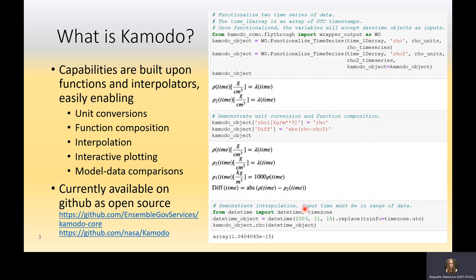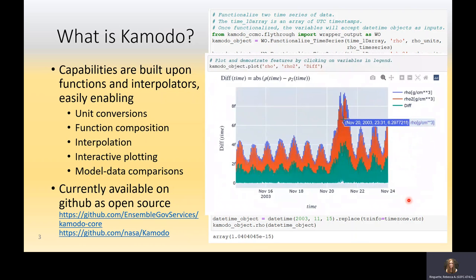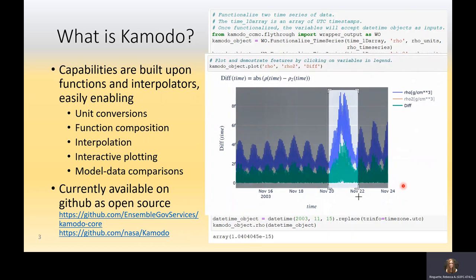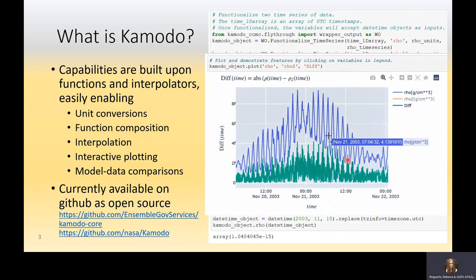Because Komodo builds upon functionalized data, there's also interpolation available and a large variety of interactive plotting for more dimensional data. It's based on Plotly, which means you can click on variables, you can zoom, you can pan, you can mouse over to get information and so on. All of these capabilities are possible through Komodo and it's available on GitHub as open source software in Python.